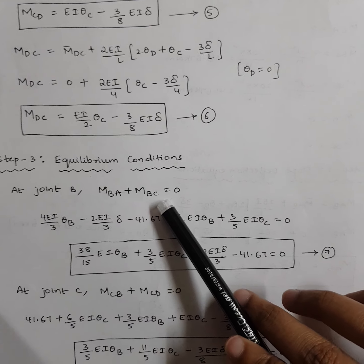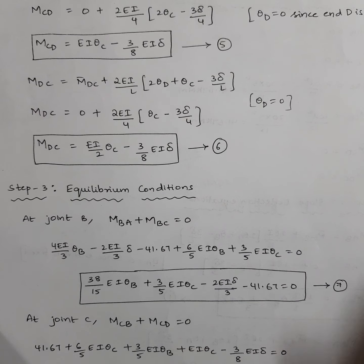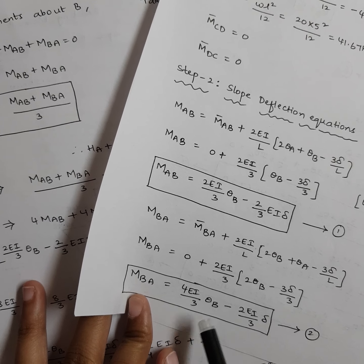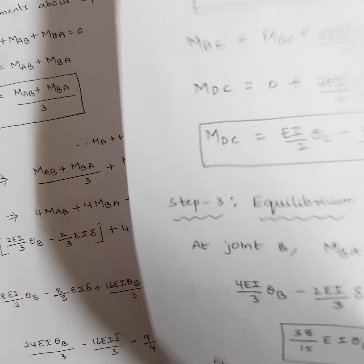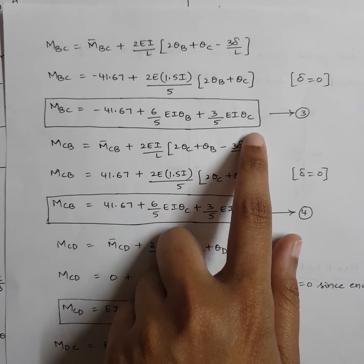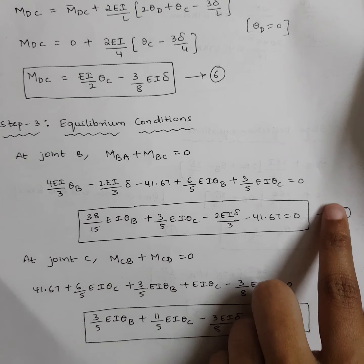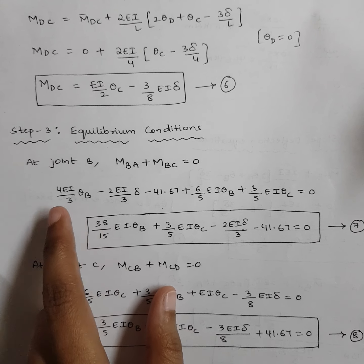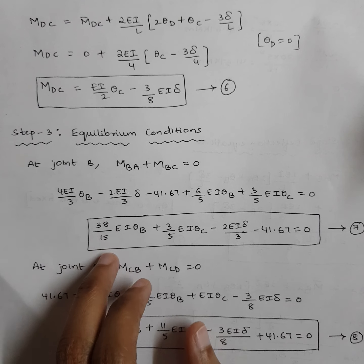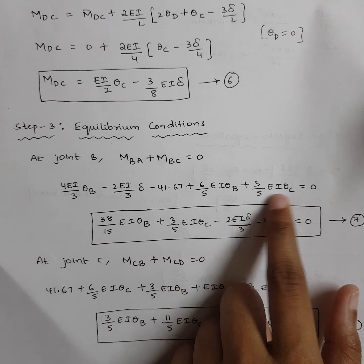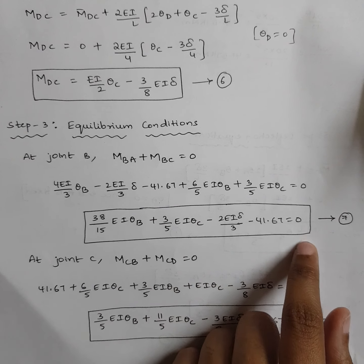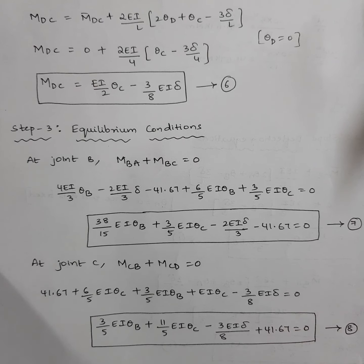Applying the joint condition at B: MBA + MBC = 0. Substituting equations 2 and 3 — MBA = (4EI/3)θB − (2EI/3)δ and MBC = −41.67 + (6/5)EI·θB + (3/5)EI·θC — and simplifying using LCM gives: (38/15)EI·θB + (3/5)EI·θC − (2EI·delta)/3 − 41.67 = 0. This is equation number 7.